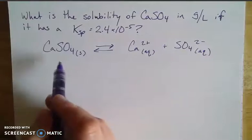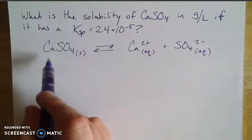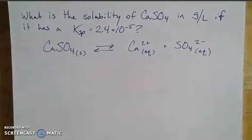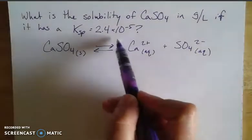If you were to look up in a solubility table what the solubility of calcium sulfate is, you'd probably see that it's pretty insoluble. And you can tell that based on the Ksp value here.